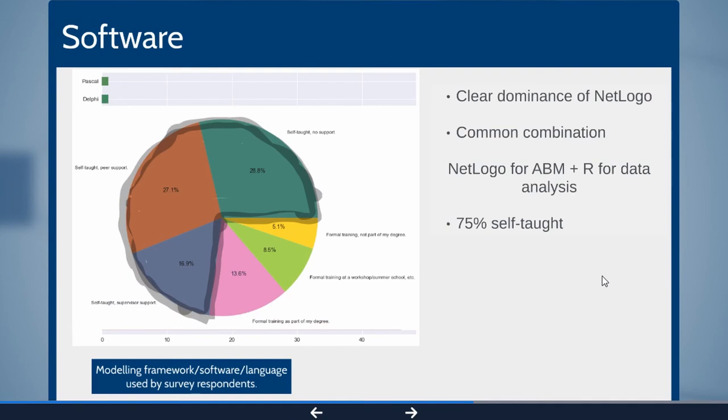This is another point to cry about: 75% of agent-based modelers in archaeology actually learned it themselves, which is horrendous when you think about it because it's highly technical and difficult skill, and those poor people had to sit there and cry over their code, just like me.